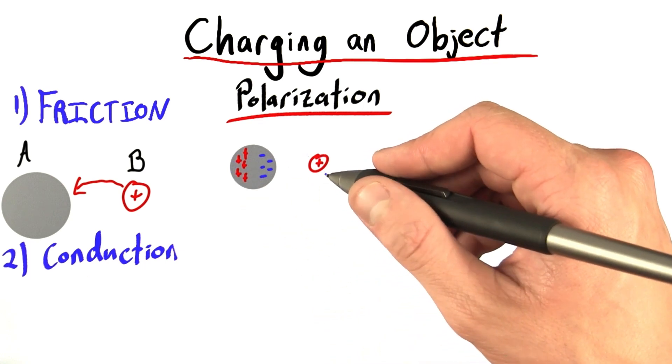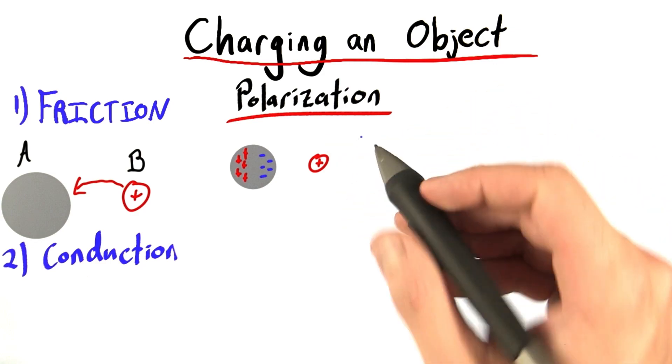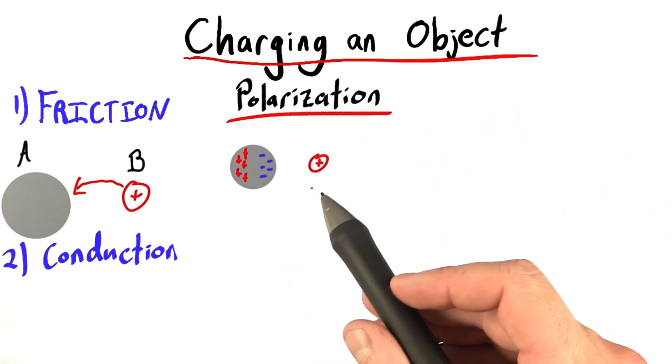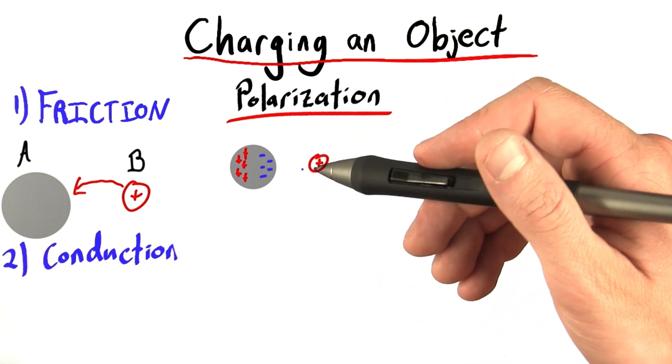Now, I want to do something a little different, something that we haven't done before. I want you to really think creatively here and tell me, how can we use this idea of polarization to create a charged object, or maybe to create two charged objects?